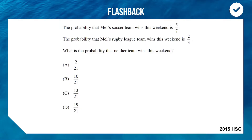G'day everyone, welcome back to the first and only math channel on YouTube, McGrath-matics. Today we're starting off with a flashback from the 2015 HSC advanced math exam. The probability that Mel's soccer team wins this weekend is five-sevenths, and the probability that her rugby team wins is two-thirds. Which of these four options is the probability that neither of her teams wins this weekend? Pause the video and decide.